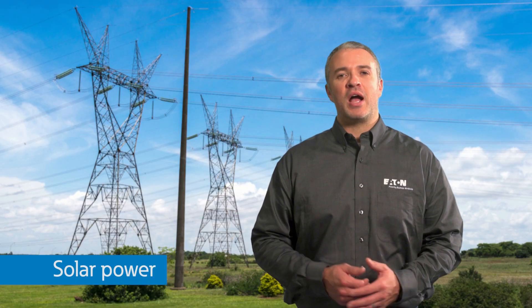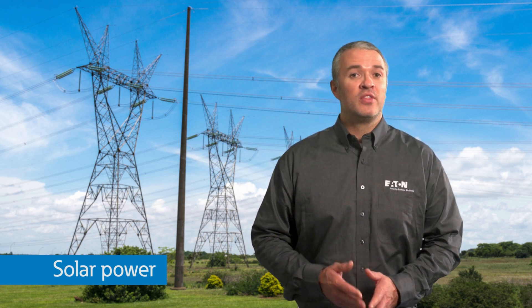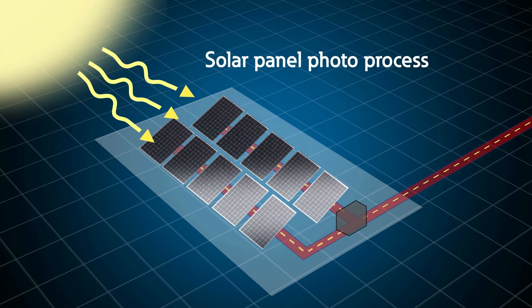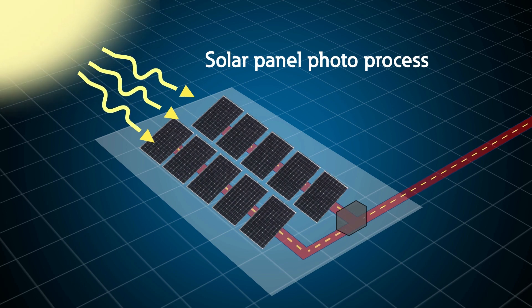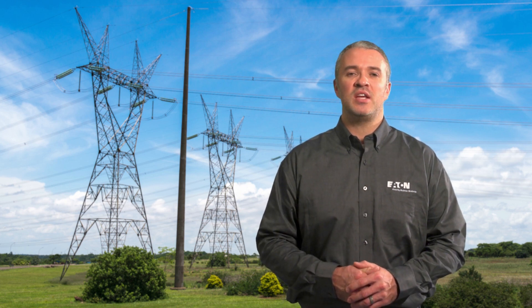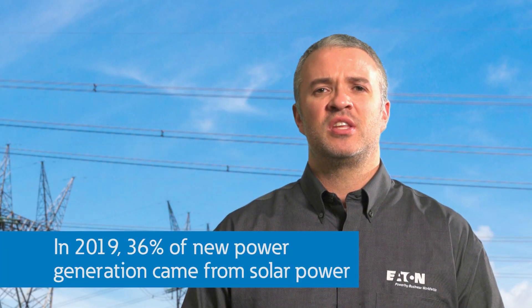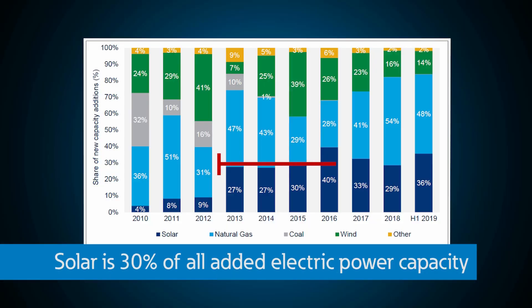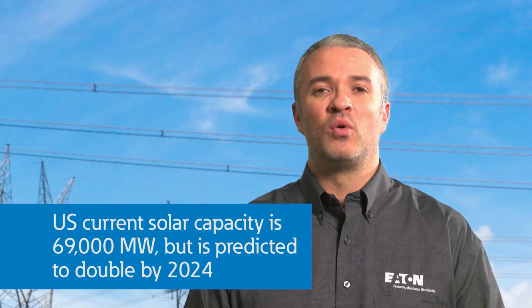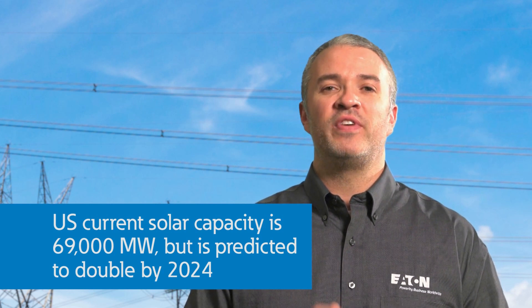Solar power has been on a steady rise as it becomes more available and a good economic investment, with lots of incentives in place to promote its growth for homes or businesses. Solar generation is totally different from the others — there is no prime mover or AC generator with solar panels. Solar panels rely on radiation from the sun to be absorbed by photovoltaic panels to produce DC power, which is then converted into AC by power electronics inside an inverter. 36% of all new electricity generating capacity additions this past year are from solar power, and our current solar capacity is 69,000 megawatts, on track to double by 2024.